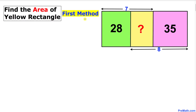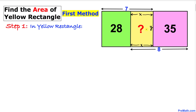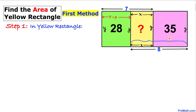Let's get started with the first method. Let's focus on the yellow rectangle in the middle. I'll call the length of this yellow rectangle x and the width y. The width of all three rectangles is going to be y as well. The total length on one side is 7, and since the yellow rectangle has length x, the remaining length is 7 minus x.